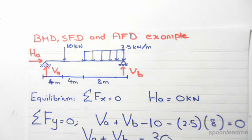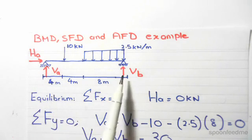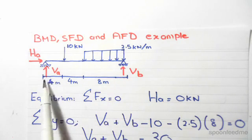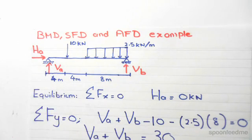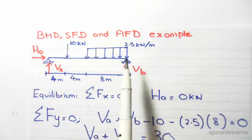To start off, we have this structure. We have a pin on the left hand side and a roller on the right hand side. On the pin we have two reaction forces, one vertical and one horizontal, whereas on the roller we have one vertical force.